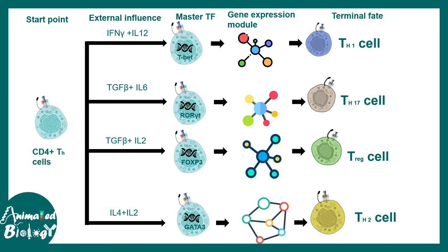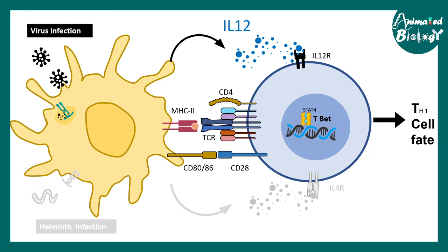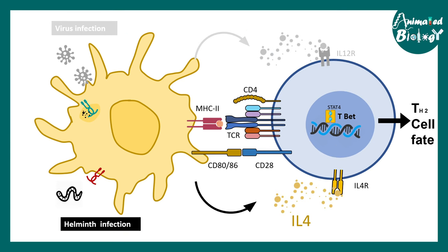Polarizing cytokines link interleukin signaling to the type of infection. A viral infection detected by toll-like receptors in dendritic cells causes secretion of IL12, pushing T cell fate toward TH1. A helminth infection triggers IL4 production, pushing T cells toward TH2 subtype. Antagonism occurs between these pathways, and the context is governed by the type of pathogen.